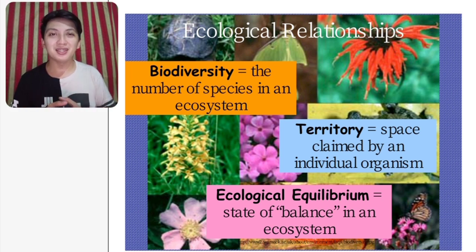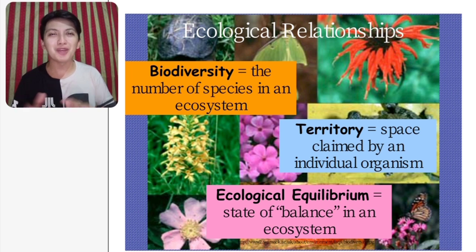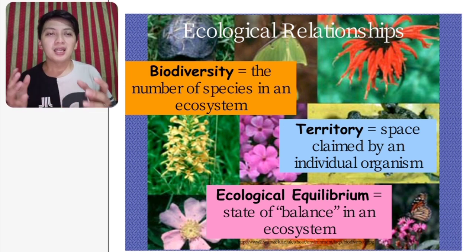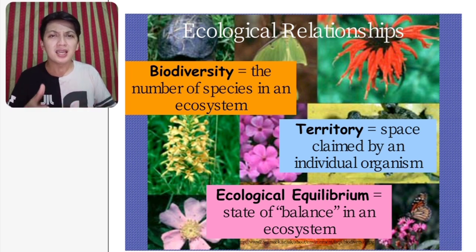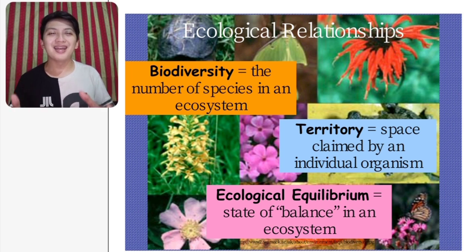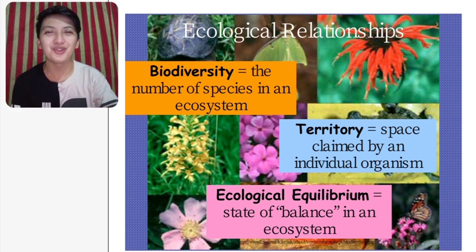Let us start with biodiversity. Biodiversity is the number of species in an ecosystem — bio means life and diversity means differences, the differences of organisms in a specific location. The next word is territory: the space claimed by an individual organism. If a place is owned by a specific living thing, that is considered their territory. The third word is ecological equilibrium — a state of balance in an ecosystem, maintaining the balance in the environment.